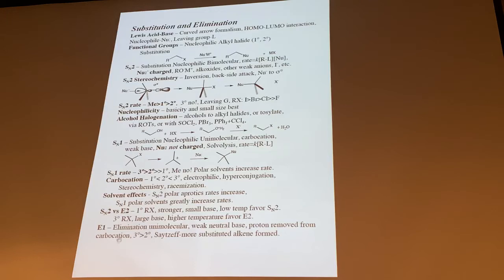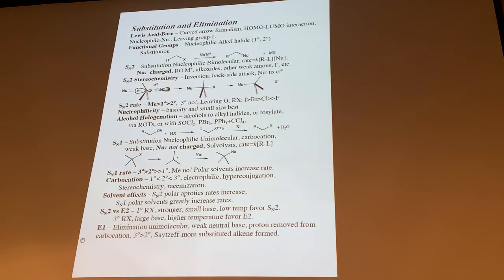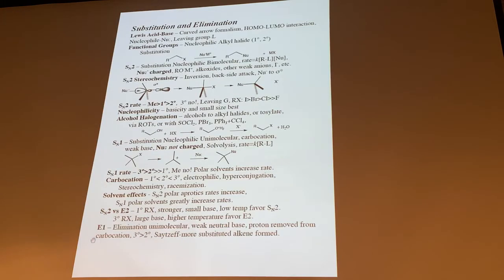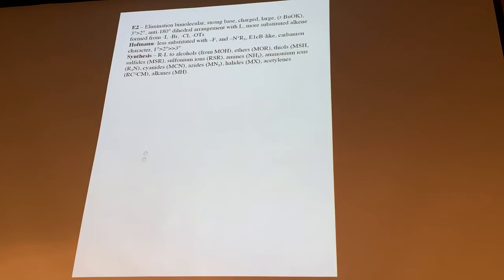E1 — forget about it. That's just confusing. It's not synthetically useful. It fits into the overall mechanistic picture but those are never successful reactions — it has to be an ionizing event with a non-nucleophilic solvent. I really downplay E1. For E2, if we want to do an elimination, we add a strong base and get it done with. We don't wait around for things to ionize. It always gives a mixture anyway. With different nucleophiles we can make a whole range of different products.